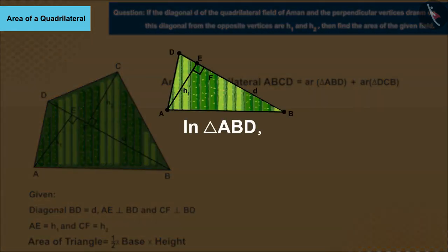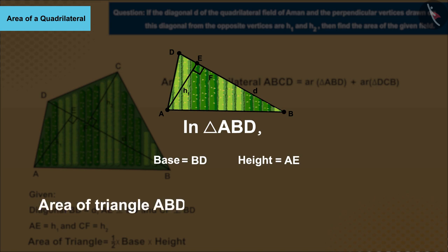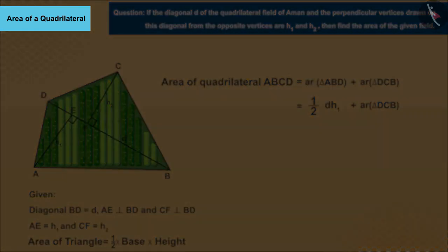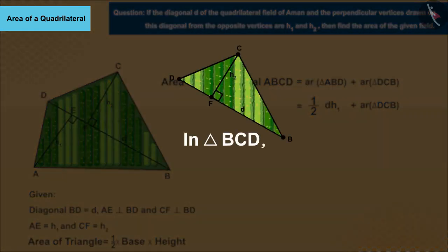is the height of the triangle and BD is the base of the triangle, with the help of which we can find the area of triangle ABD with this formula. Similarly we can also find the area of triangle BCD.